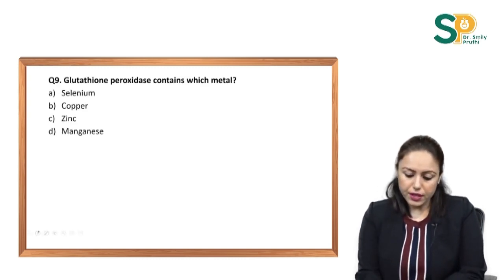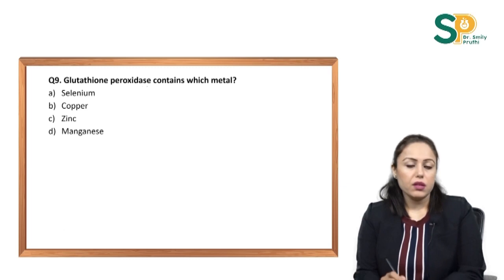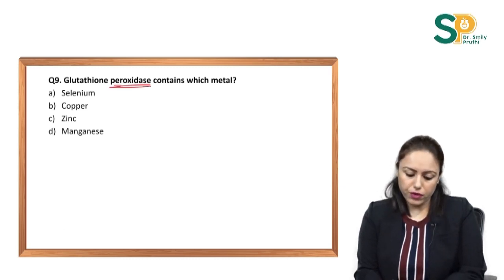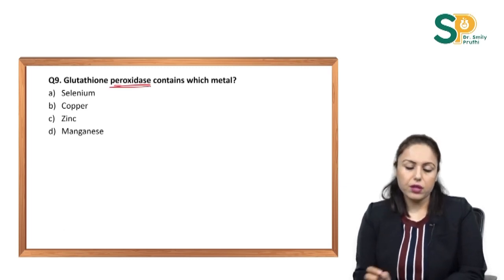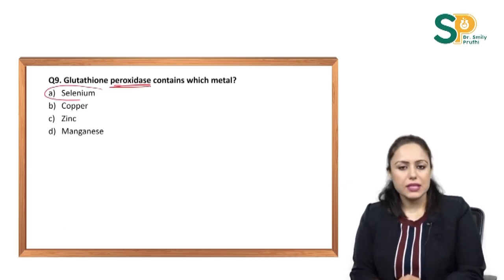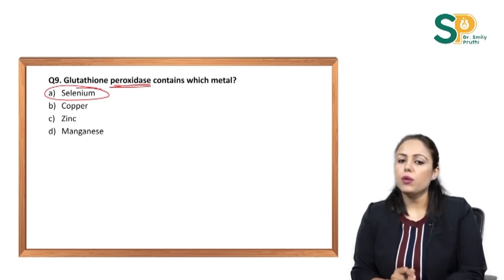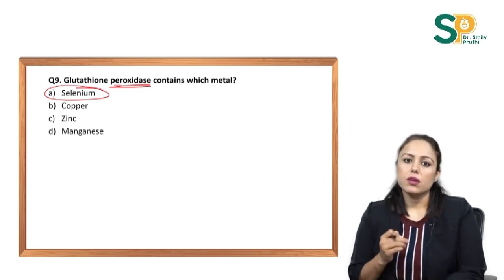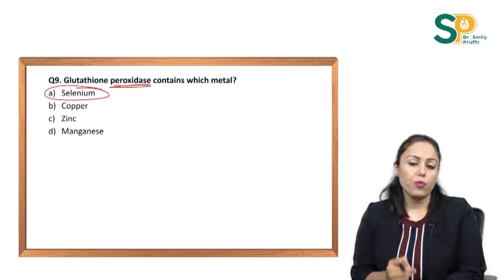Question number 9: glutathione peroxidase contains which metal? This is a frequently asked, very important question. The answer is selenium — selenium is the prosthetic group for this enzyme.